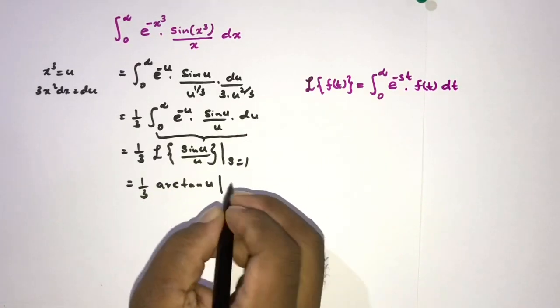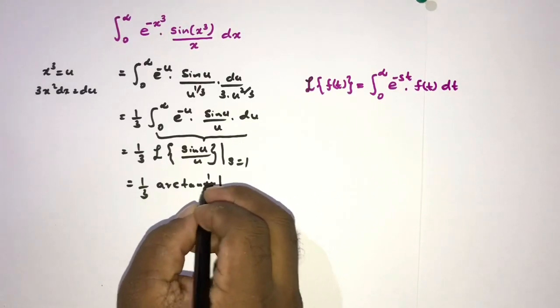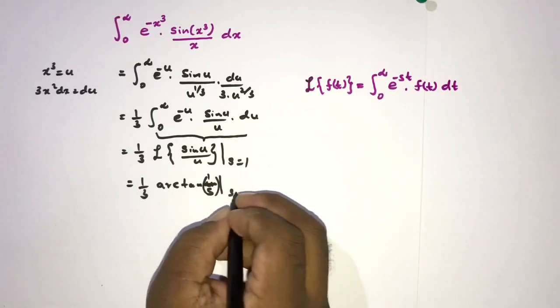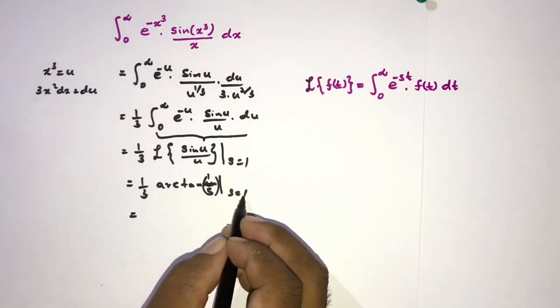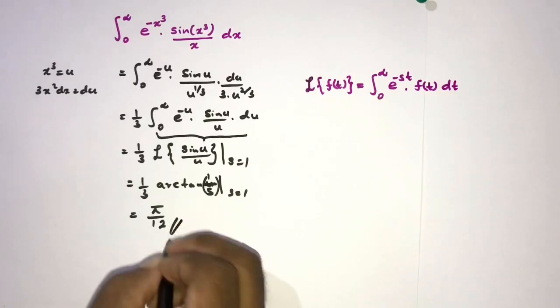Arctan of 1 over s. Here s equals 1, so when s equals 1, arctan of 1 is π/4. So the answer is π/12.